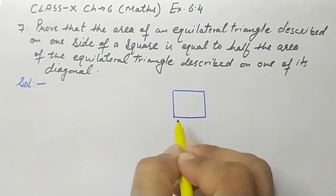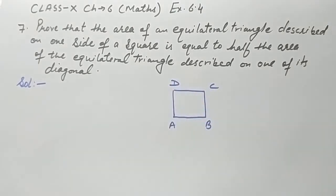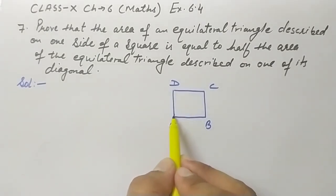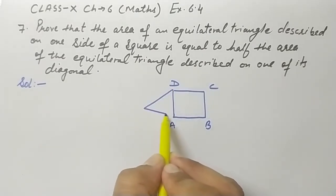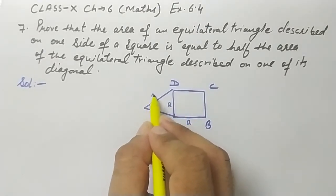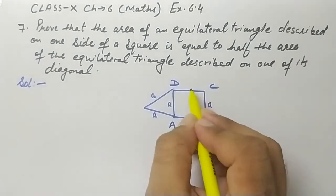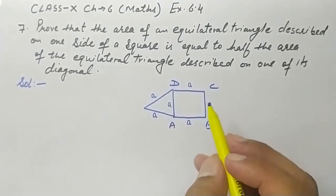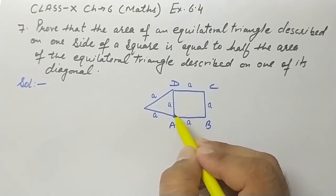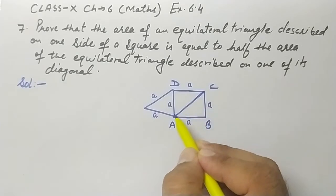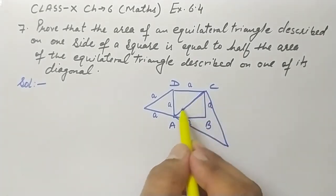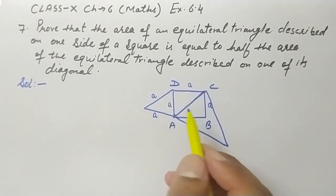Suppose square ABCD is the given square. One equilateral triangle is on one of its sides — suppose this is side AD, and on this side one equilateral triangle is drawn. Suppose the side of this square is 'a' units, so this equilateral triangle also has side 'a' units since all sides of a square are equal. One more equilateral triangle is on its diagonal AC, and on this diagonal another equilateral triangle is drawn.